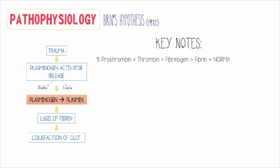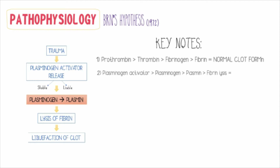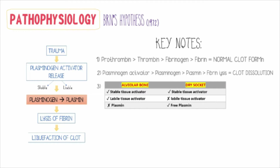When prothrombin is transformed into thrombin by clotting factors, thrombin acts to transform fibrinogen into fibrin — this leads to normal clot formation or fibrinogenesis. But when efficient plasminogen activators activate plasminogen, it is converted into plasmin, which leads to fibrin lysis or clot dissolution — also called fibrinolysis. Alveolar bone usually has no plasmin in a healthy state, whereas dry socket is characterized by the presence of stable tissue activators and lots of free plasmin.